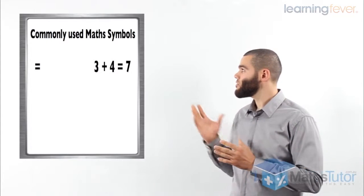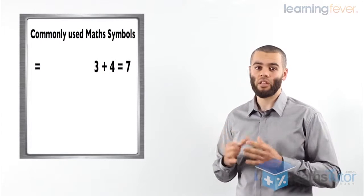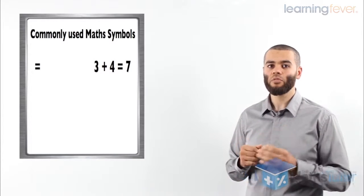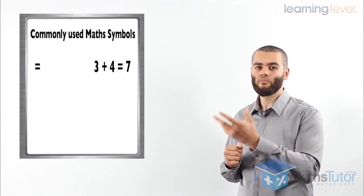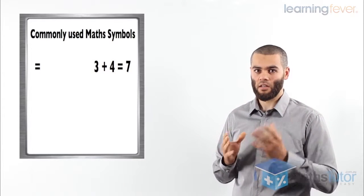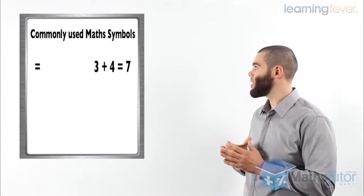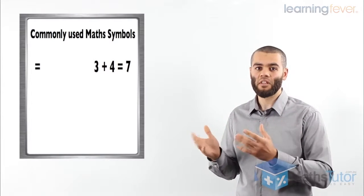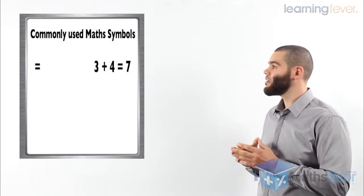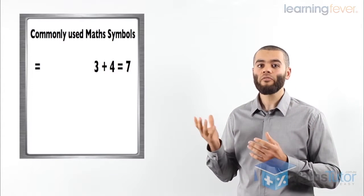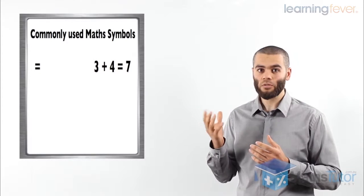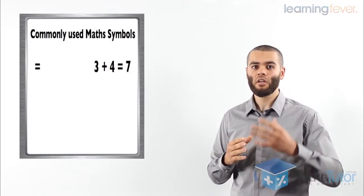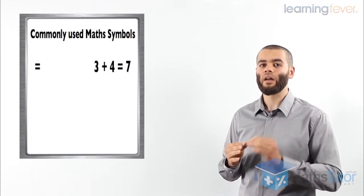The first symbol you've already come across is the equal sign. The equal sign is basically the symbol that shows us that the problem equals the solution we're going to get. For example, 3 plus 4 equals 7, meaning that 3 added to 4 is going to equal 7. We're always going to be using it throughout high school.